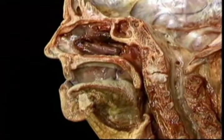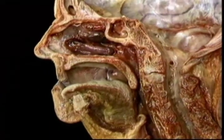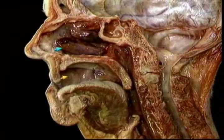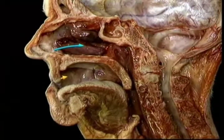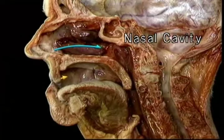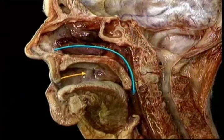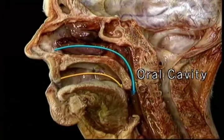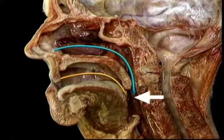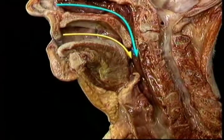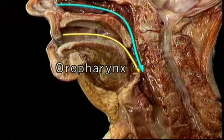The passage for air and the passage for food and liquid begins separately at the nose and the mouth. Air passes backward through the nasal cavity and the nasopharynx. Food and liquid pass backward through the oral cavity. The two passages unite here. Air, food, and liquid all pass through this common passage, the oropharynx.